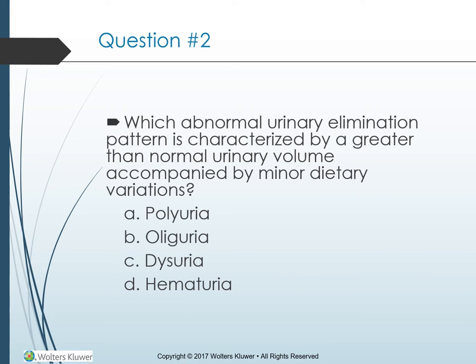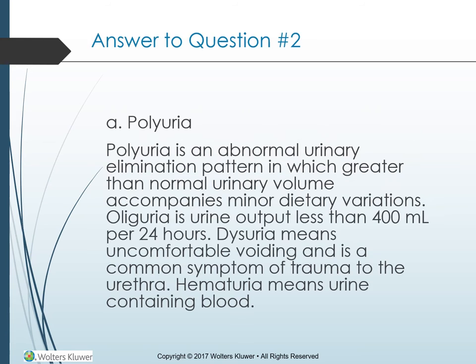Question — which abnormal urinary elimination pattern is characterized by greater than normal urinary volume accompanied by minor dietary variations? A. Polyuria, B. Oliguria, C. Dysuria, D. Hematuria. The answer is A — Polyuria. Polyuria is an abnormal urinary elimination pattern in which greater than normal urinary volume accompanies minor dietary variations.